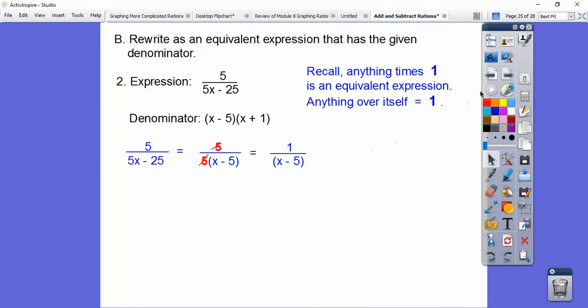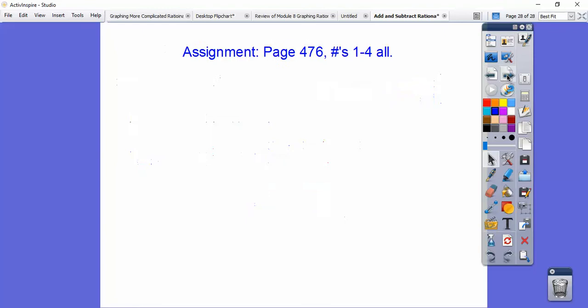So we're going to multiply this by 1. But my 1 is going to be X plus 1 over X plus 1. So there's our answer right there. So it's the 1 times X plus 1, which is just X plus 1. And then there's our denominator, X minus 5, X plus 1. If you are sitting in my class, I'm going to give you that quick assignment right there. Thank you.